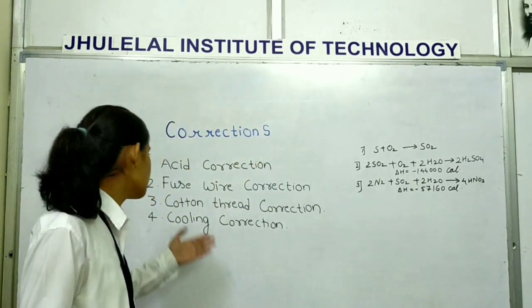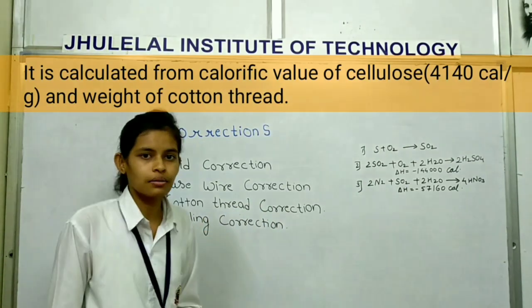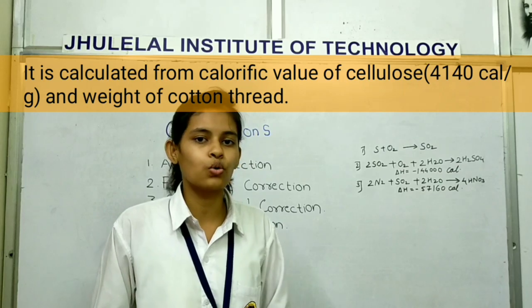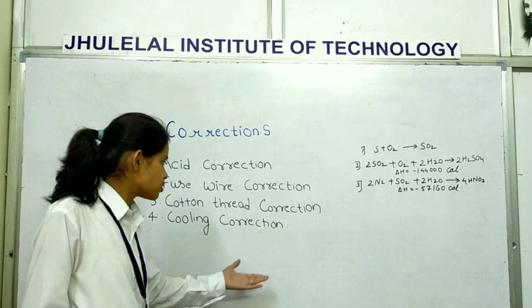Now we see the Cotton Thread correction. The correction of cotton thread is done by subtracting heat liberated in calories due to combustion of Cotton Thread. And now lastly we see the cooling correction.